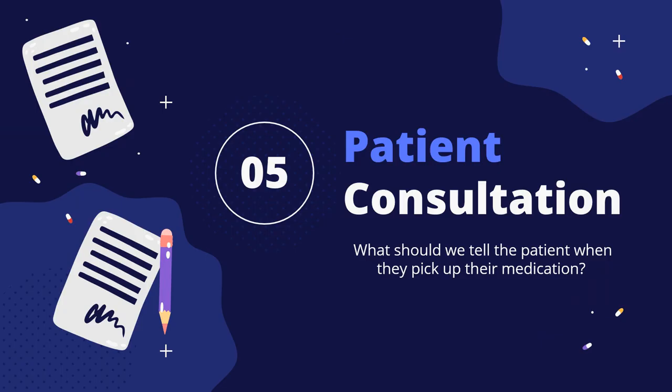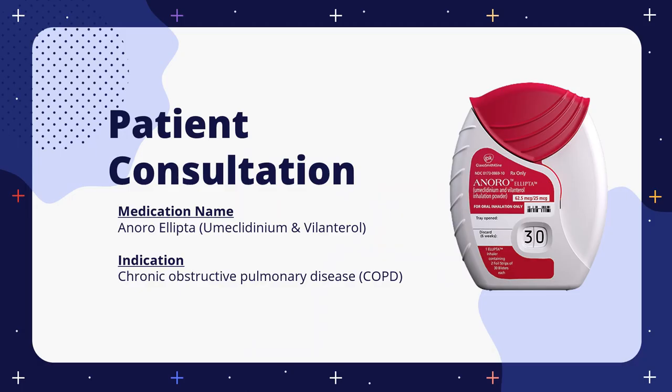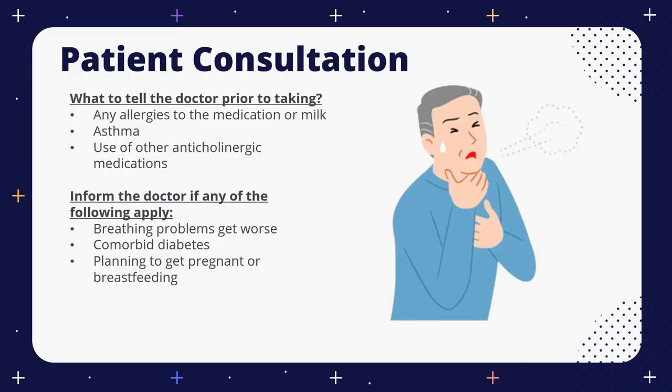Patient consultation: What should we tell the patient when they pick up their medication? The medication name is Anoro Ellipta, or umeclidinium and vilanterol for the generic, and it is used strictly for COPD. If the patient is allergic to the medication or milk, has asthma, or is concomitantly using any other anticholinergic medications, let the doctor know right away. Furthermore, if the patient experiences any breathing problems, has comorbid diabetes, or plans on getting pregnant or is breastfeeding, inform the doctor as therapeutic changes need to be made.